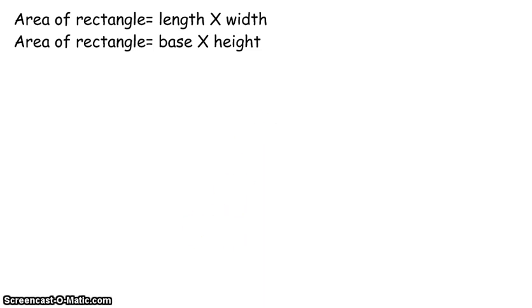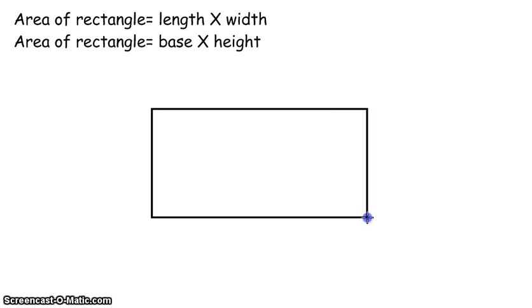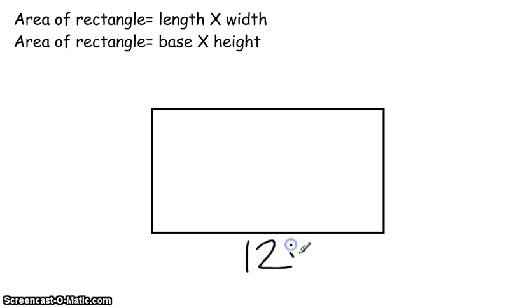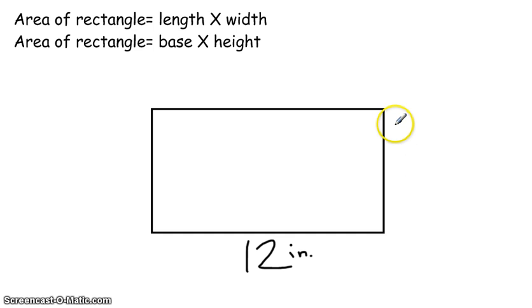Let's do just a really simple example — just a regular rectangle — and we're going to find the area. We're going to say that this is 12 inches, and this will be our base or our length. And then over here for our height or our width, we're going to have 6 inches.